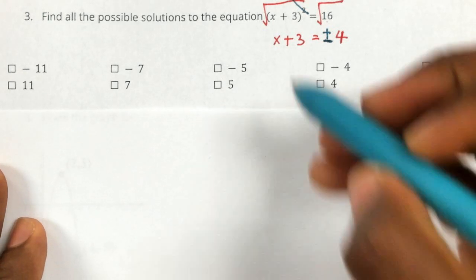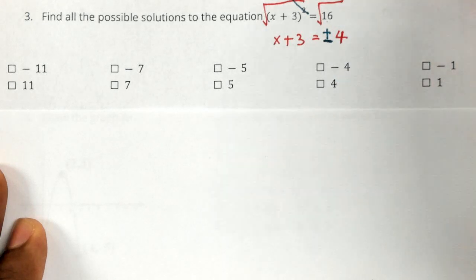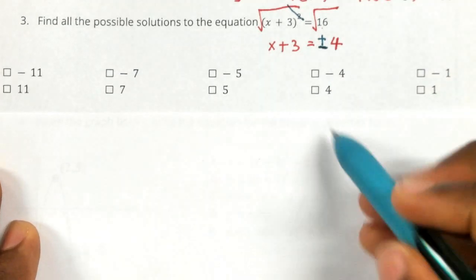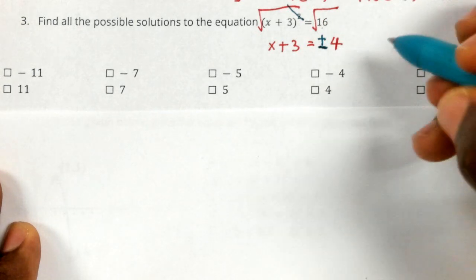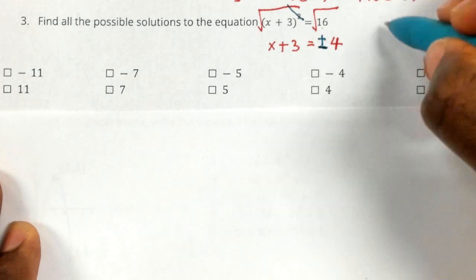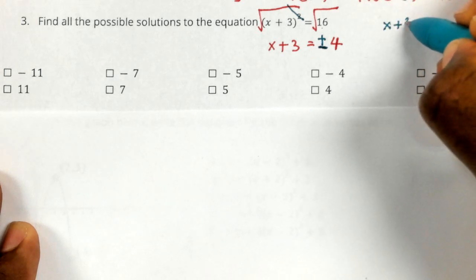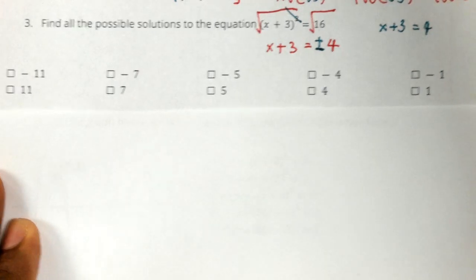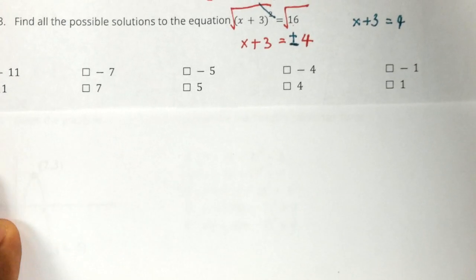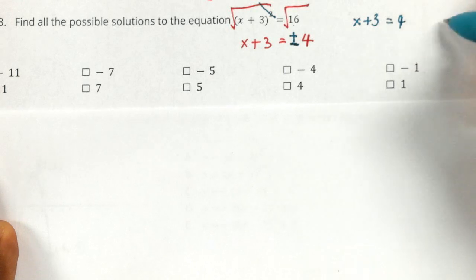So now I will subtract three, but what are you subtracting three from? Well, this plus or minus means that your four is both positive and negative. So you're saying that X plus three could be equal to positive four.